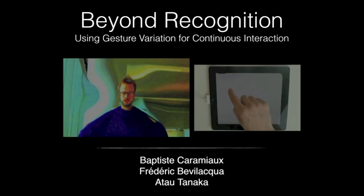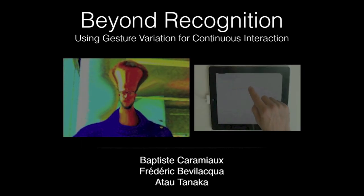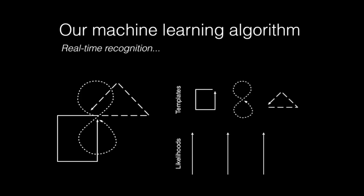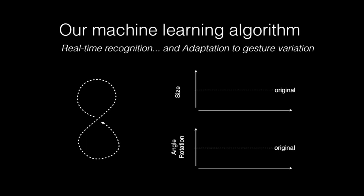Beyond Recognition is a technique to use gesture variation for continuous interaction. We've implemented a machine learning algorithm that performs real-time recognition, classifying a gesture while it's being performed, and adapts to variations in gestures such as size and orientation.